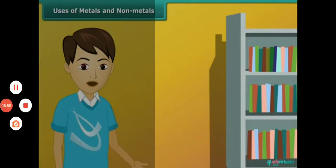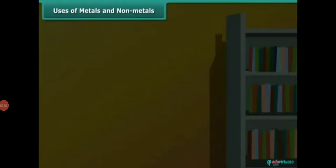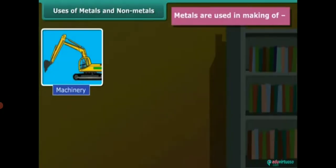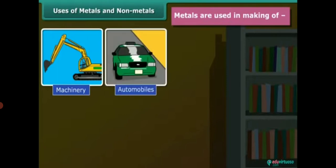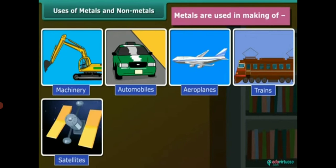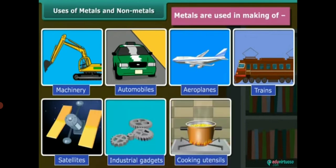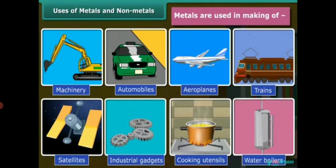As we know that metals are hard in nature. So they are used in making machinery, automobiles, aeroplanes, trains, satellites, industrial gadgets, cooking utensils, water boilers etc.